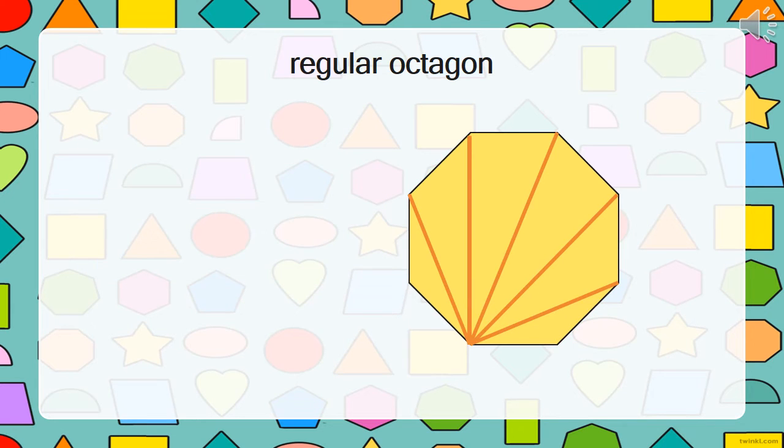As you can see, this regular octagon can be divided into six triangles. Using this knowledge we can again work out the sum of the interior angles, which would be 180 multiplied by 6. Pause the video again and give yourself time to answer this question. That's right, it's 1080. That means the total sum of the interior angles is 1080 degrees.